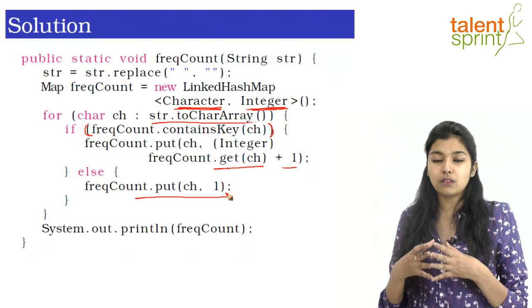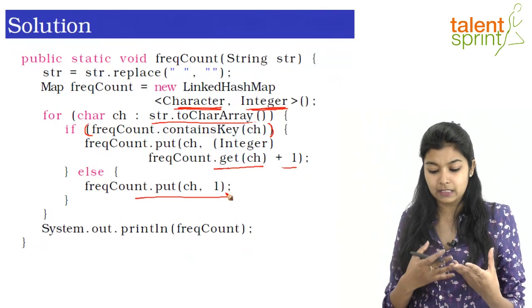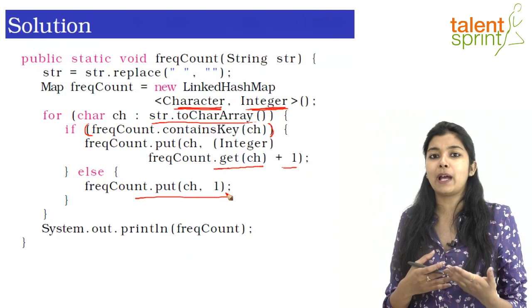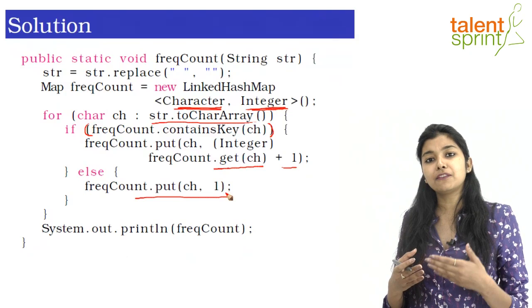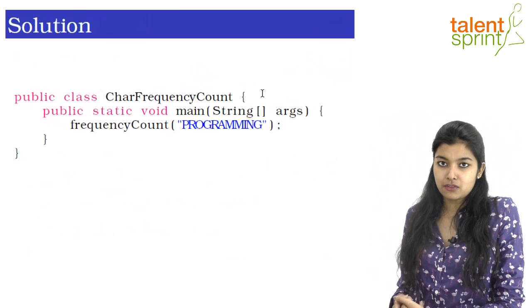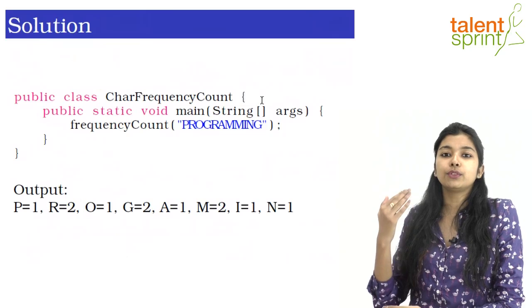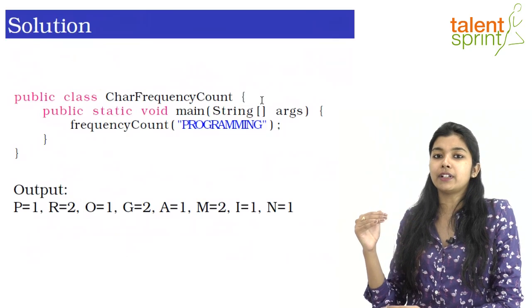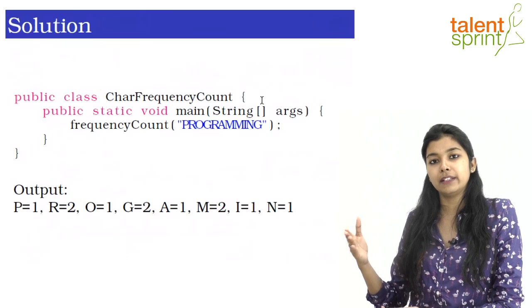Using the Map interface our program became fairly simple. Everything is handled by inbuilt functions: toCharArray converts the string to a character array, containsKey checks whether the map already contains the character, and the put and get functions handle storing and retrieving values. In the main function we pass the string 'programming' and the output comes out exactly as expected, printed in the order of occurrence of characters in the string — P, then R, then O, and so on.